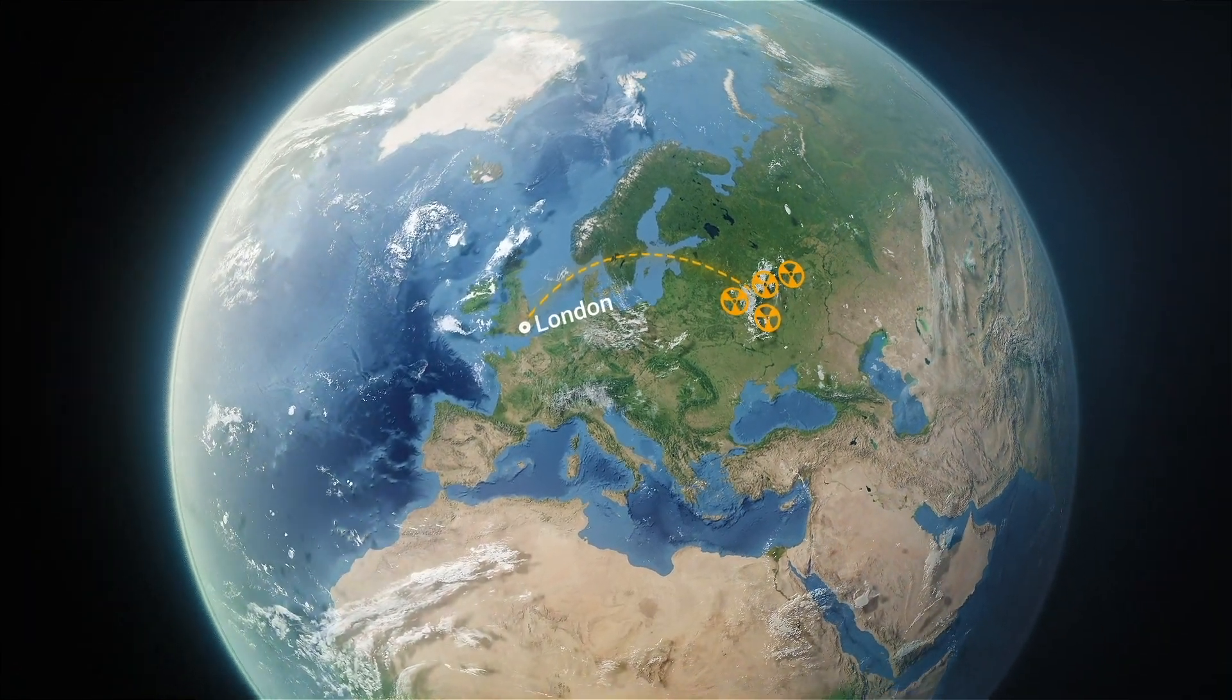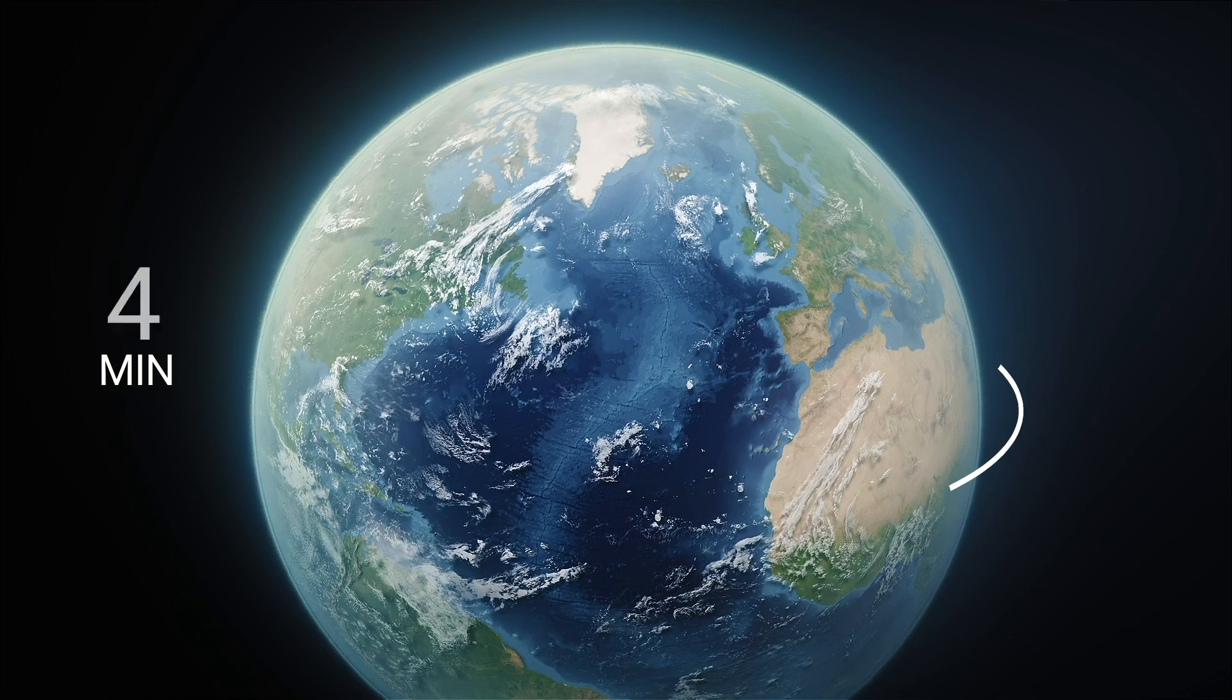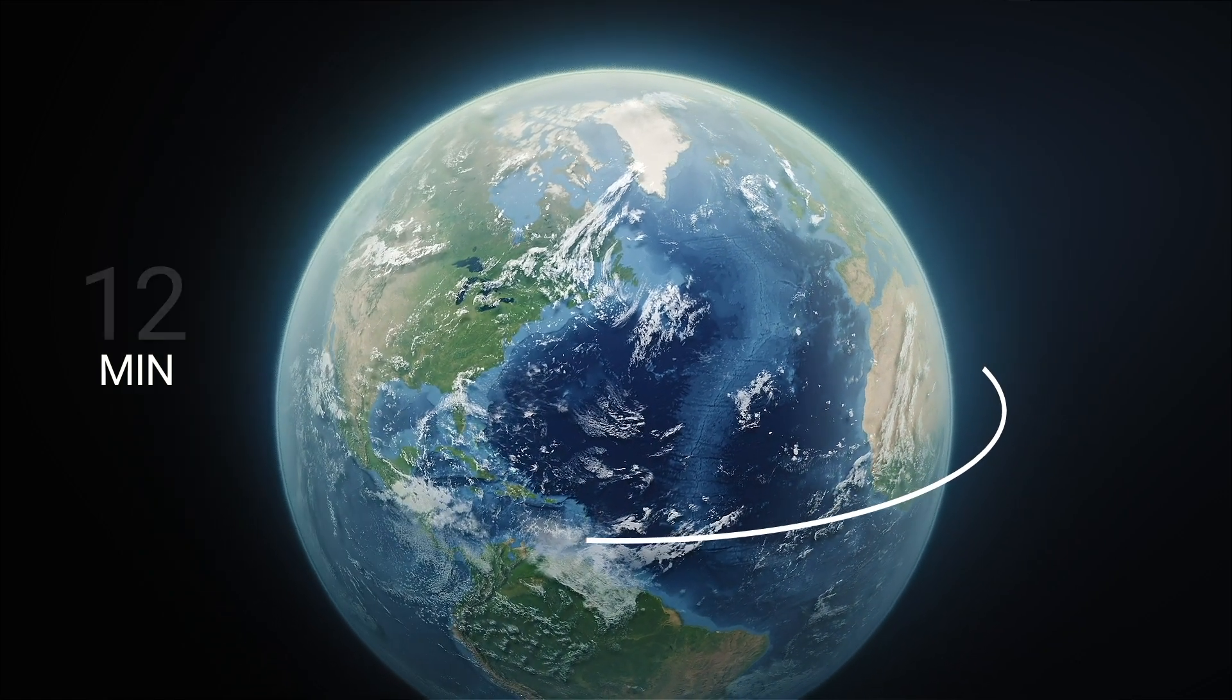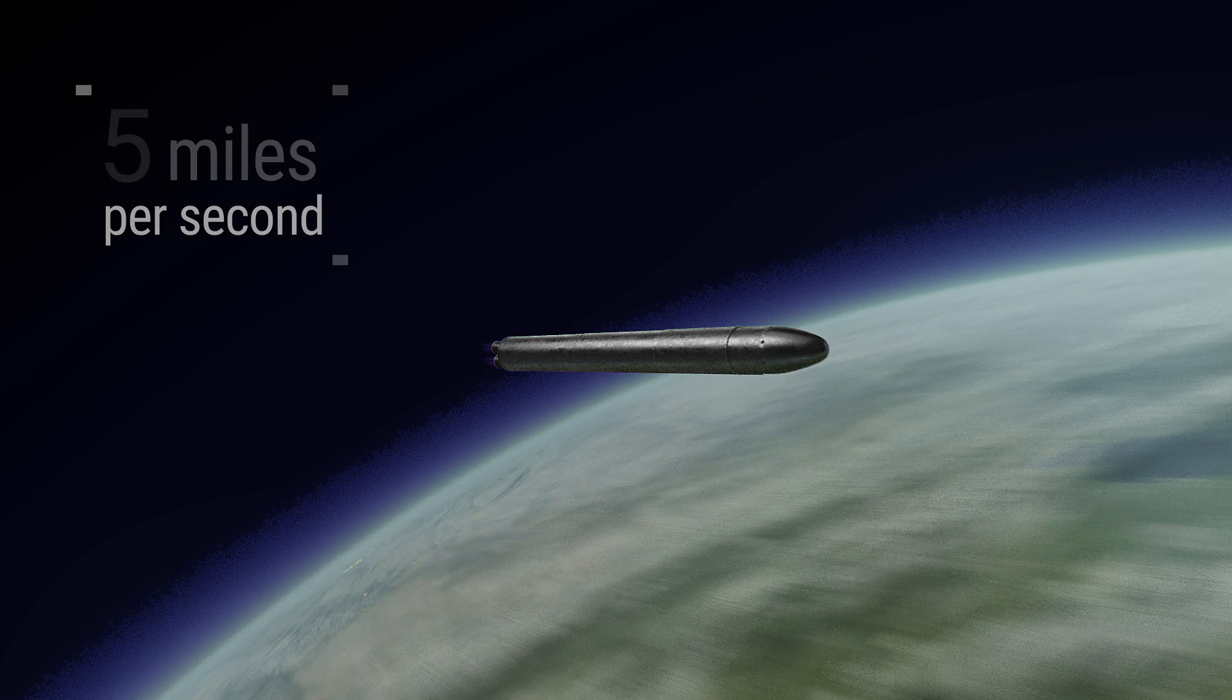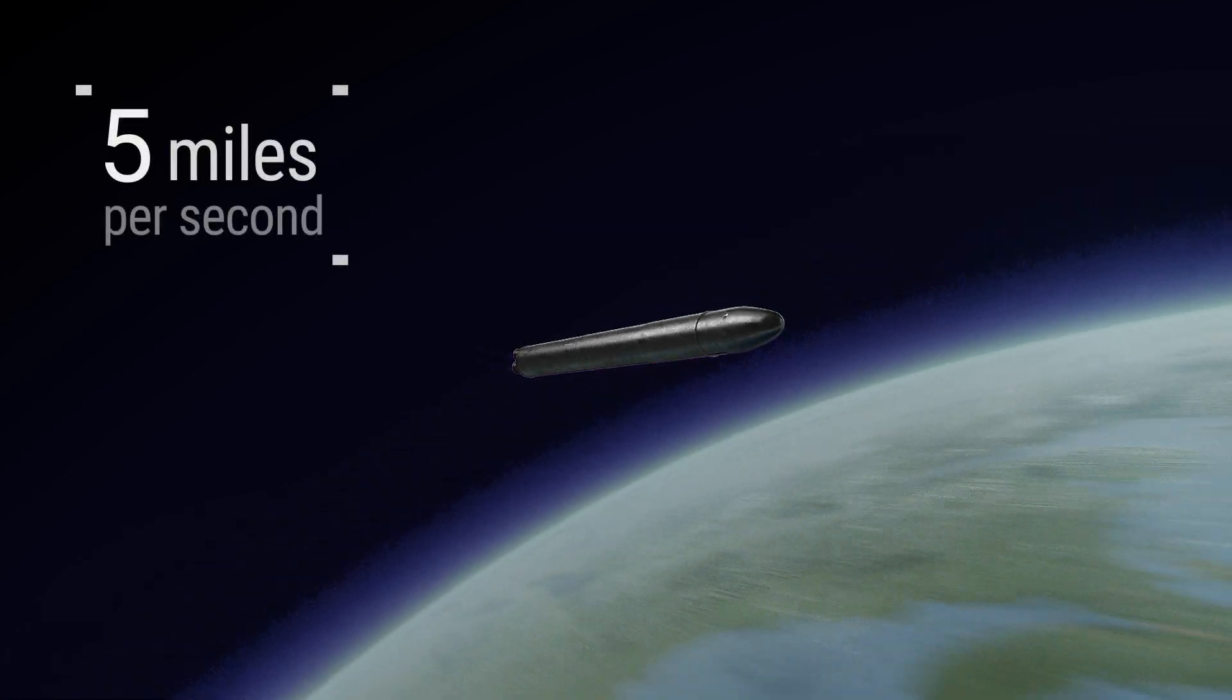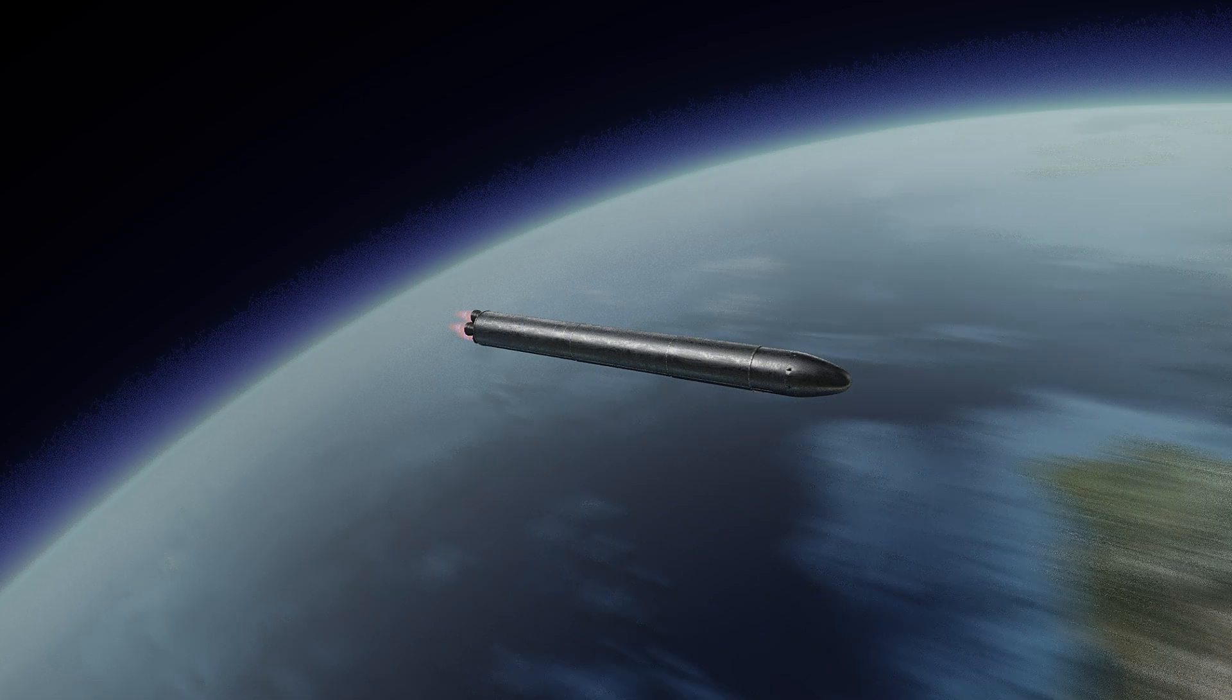The range of firing Sarmat is 18,000 kilometers, or more than 11,000 miles. This is enough to fly around the planet one and a half times. The maximum speed in the atmosphere is 17,982 kilometers per hour, or more than 11,000 miles per hour.